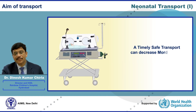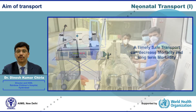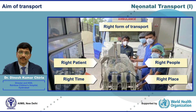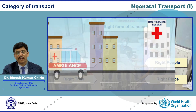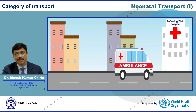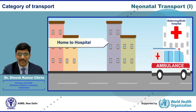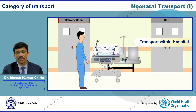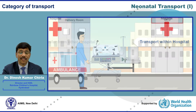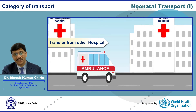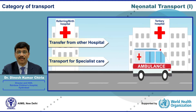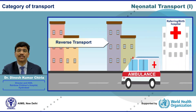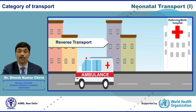A timely, safe transport can decrease mortality and long-term morbidity. The aim of transport is to transfer the right patient at the right time by the right people to the right place in the right form of transport, so that the child gets the right care throughout. Common transport categories include: home to hospital, within-hospital transfers (delivery room or OT to NICU/SNU), peripheral hospital to regional center, specialist care transfers (surgery, cardiac), and reverse transport back closer to home.